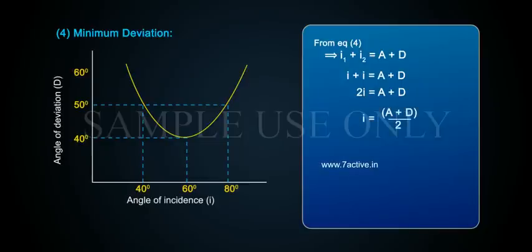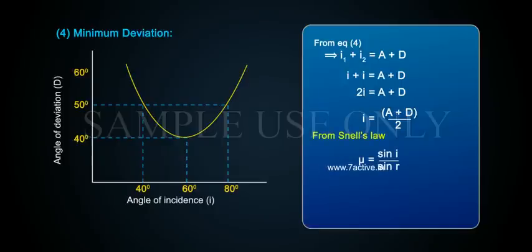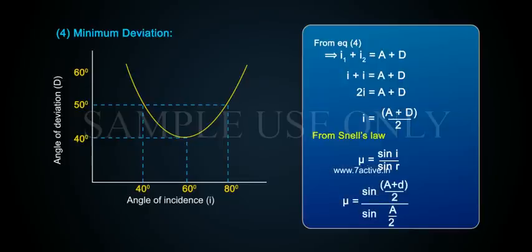From Equation 4: I + I = A + D, so 2I = A + D. From Snell's law: μ = sin(I) / sin(R), therefore μ = sin((A + D) / 2) / sin(A / 2).